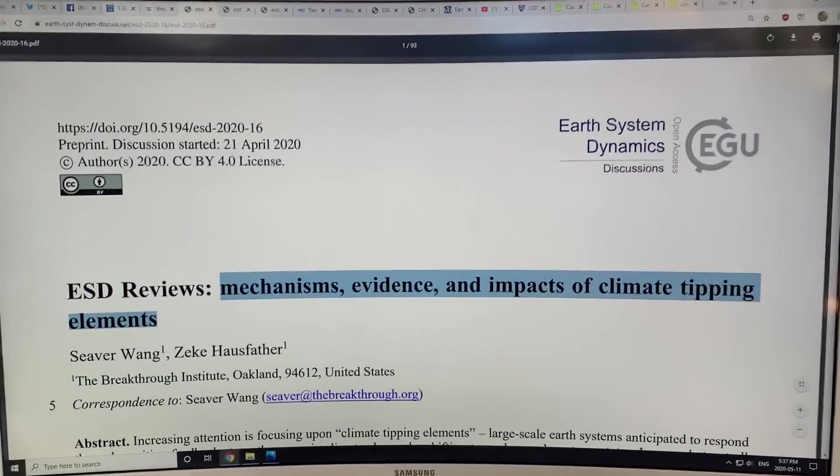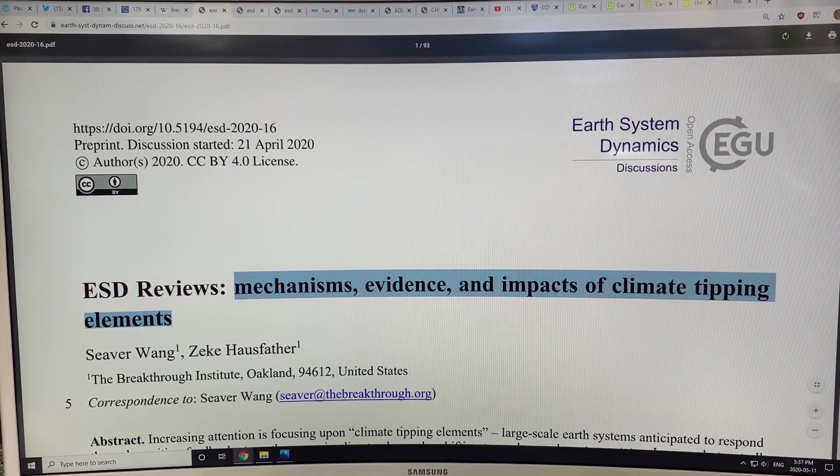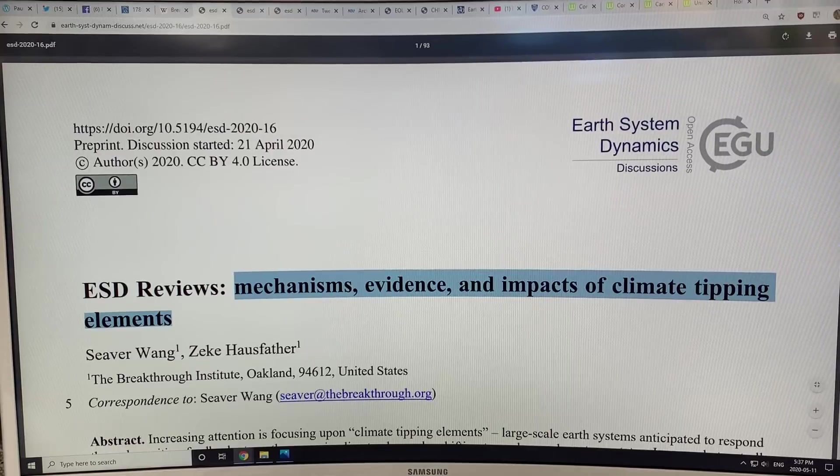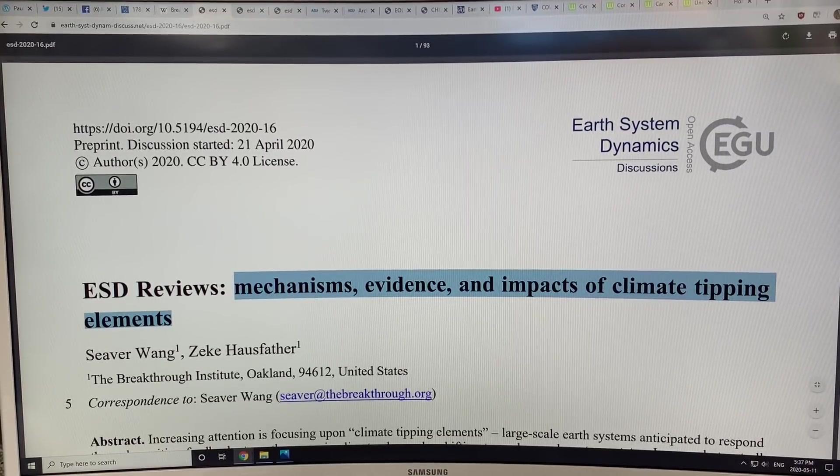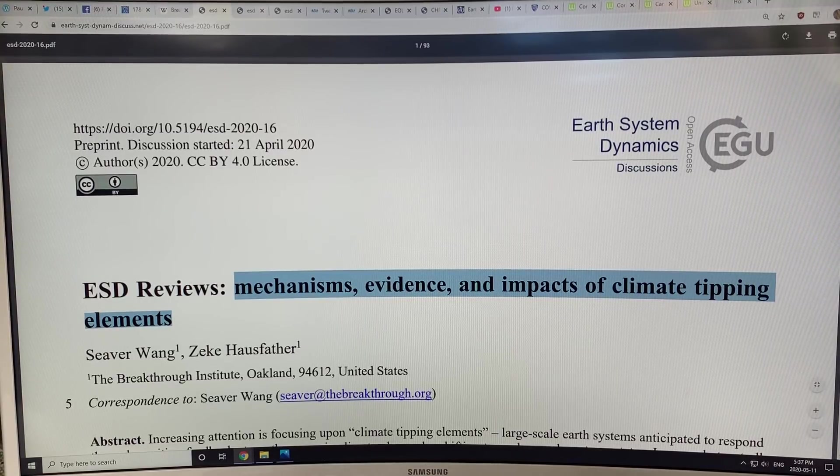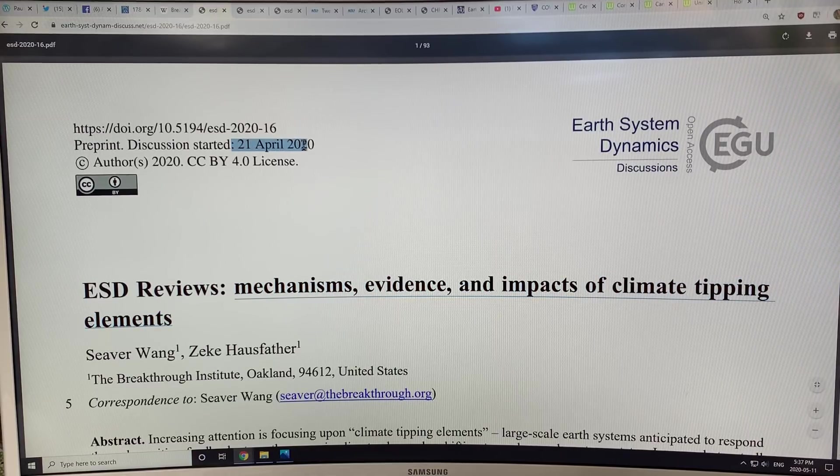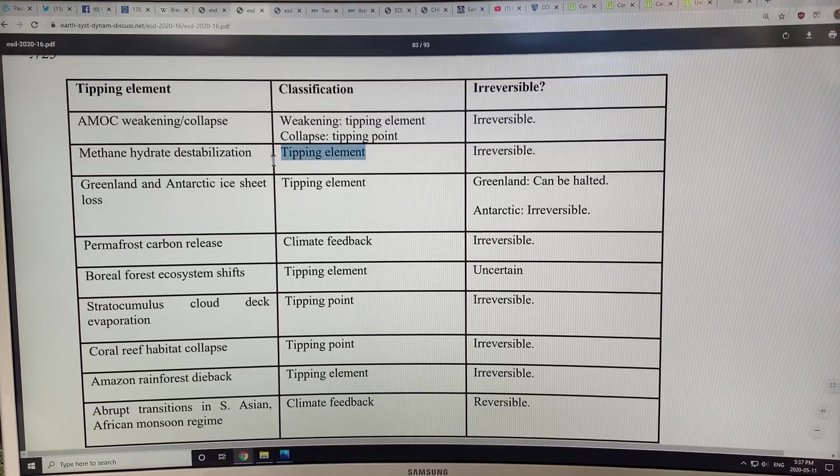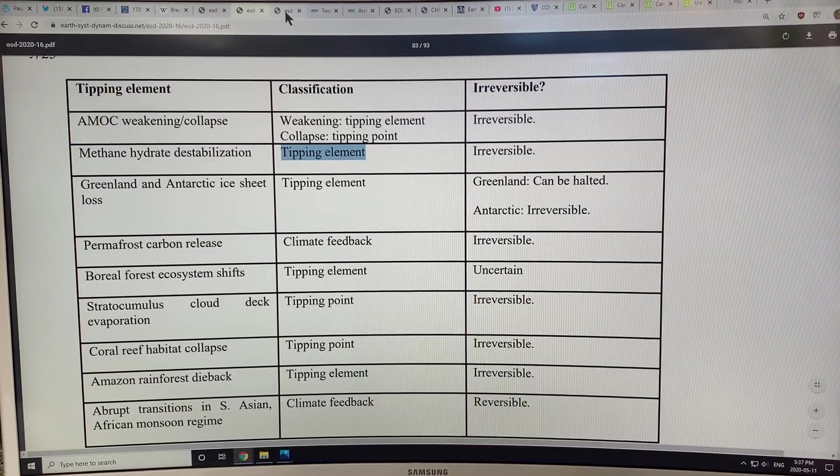I'm going to continue talking about the tipping elements in the climate system. My focus is on the Earth System Dynamics review paper on mechanisms, evidence, and impacts of climate tipping elements. Please just Google it and look at the article. It came online April 21st, 2020, so it's hot off the presses. I'm talking about the different tipping elements that are discussed in this article.